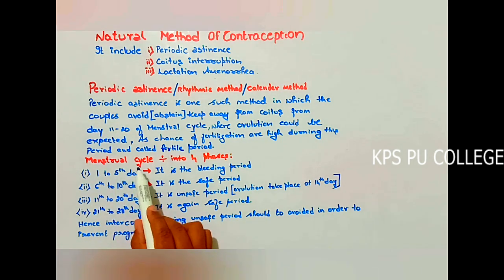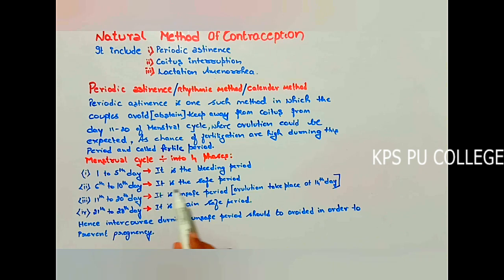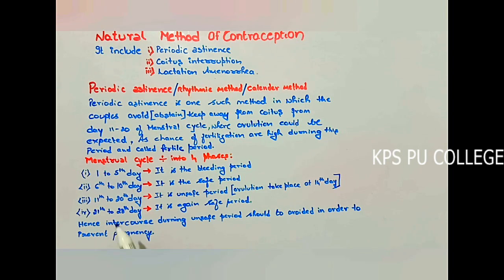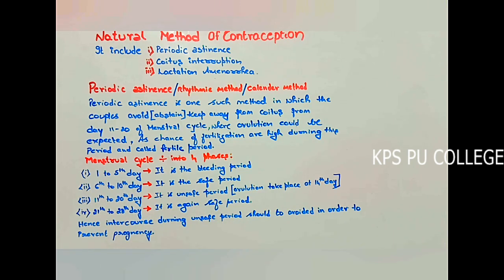The menstrual cycle can be divided into four phases. From day 1 to day 5 it is the bleeding period. From day 6 to day 10 it is the safe period because ovulation will not occur. From day 11 to day 20 it is the unsafe period because ovulation takes place around day 14. From day 21 to day 28 it is again the safe period. Intercourse during the unsafe period should be avoided in order to avoid pregnancy. This is about periodic abstinence — a natural method to avoid pregnancy.